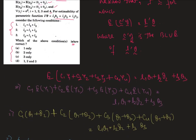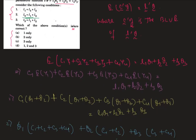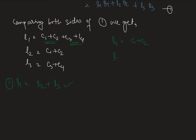Now check the second option, which is l2 equals l1 plus l3. Here l2 equals c1 plus c2, but l1 plus l3 equals (c1 plus c2 plus c3 plus c4) plus (c3 plus c4), which equals c1 plus c2 plus 2*(c3 plus c4). This is not equal to l2, so the second option is incorrect.